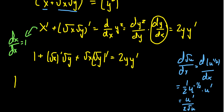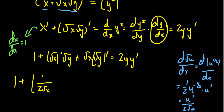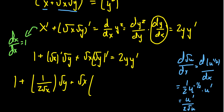Applying that here, we get 1 plus the square root of x's derivative becomes 1 over 2 times the square root of x — since the derivative of x on top is just 1 — times the square root of y. Then we have the square root of x times the derivative of the square root of y, which by the same formula gives y prime over 2 times the square root of y. This is still equal to 2y·y'.